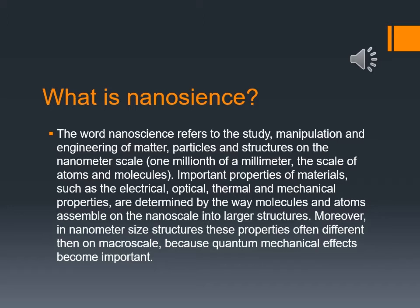Let's start with nanoscience. What is nanoscience? The word nanoscience refers to the study, manipulation, and engineering of matter, particles, and structures on the nanometer scale. Important properties of materials such as the electrical, optical, thermal, and mechanical properties are determined by the way molecules and atoms are assembled on the nanoscale into larger structures. Moreover, in nanometer-size structures, these properties often differ from the micro scale because quantum mechanical effects become important.